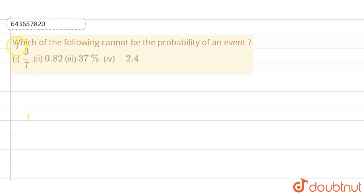Hello everyone, let's see this question. The question says, which of the following cannot be the probability of an event? 3 by 7, 0.82, 37 percent and minus 2.4.